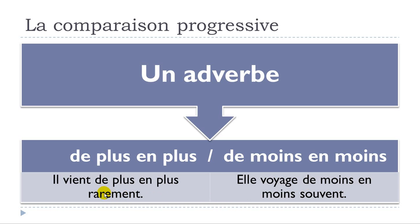So normally you would have your sentence: il vient rarement. The adverb would come after the verb. Just between the two, or to be more precise, before your adverb you will put de plus en plus, and then de moins en moins.